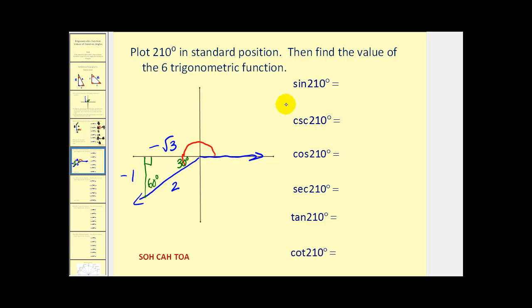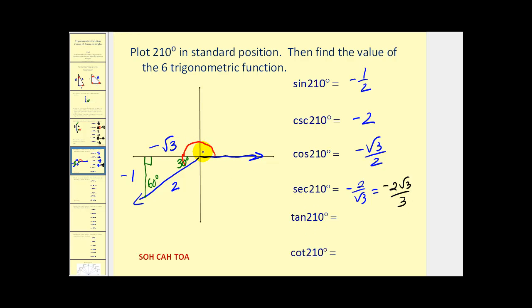The sine of 210° is opposite over hypotenuse: negative one over two, or negative one-half. The cosecant is the reciprocal: negative two. The cosine of 210° is adjacent over hypotenuse: negative square root of three over two. The secant, rationalized, is negative two square root of three over three. The tangent of 210° is opposite over adjacent: negative one over negative square root of three, which rationalizes to square root of three over three. The cotangent, its reciprocal, is square root of three.